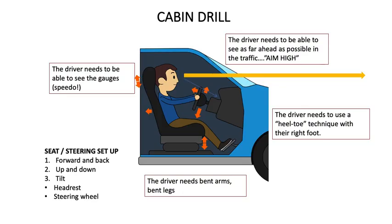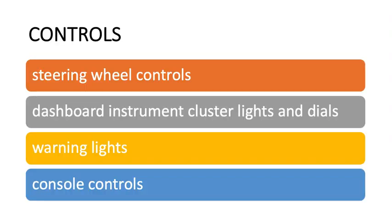Make sure before you conduct any Level 3 training that you've done a cabin drill with your student. Also keep training your students in awareness of their controls — that includes the steering wheel controls, the dash instrument cluster lights and dials, warning lights, and console controls.